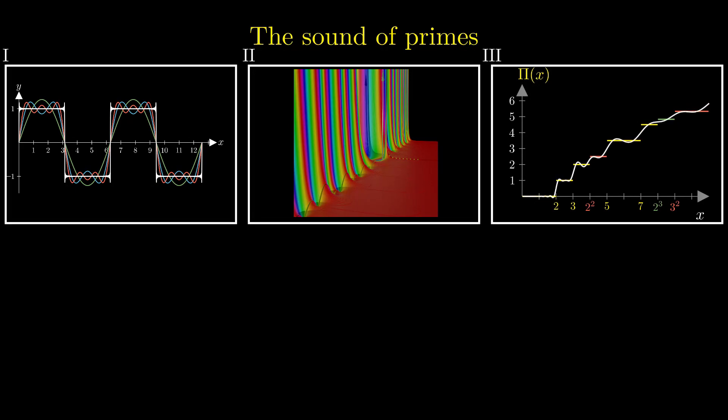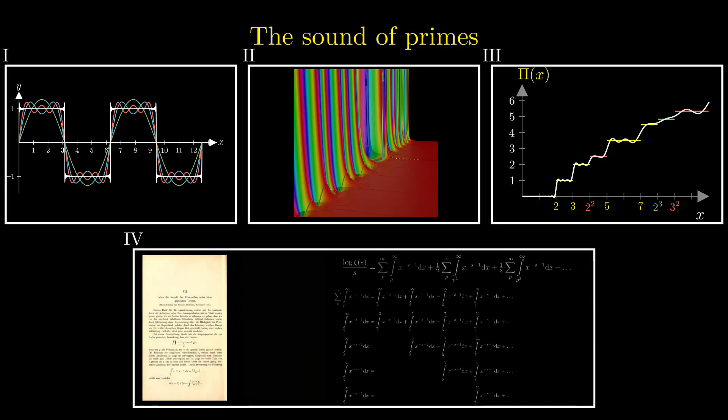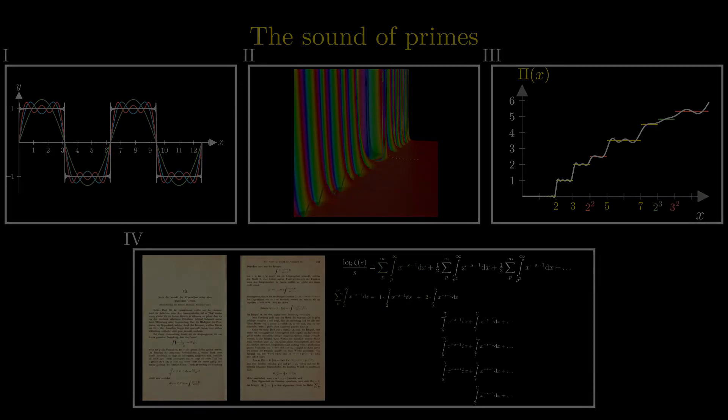We show how more and more harmonies of the zeta function refine the information about the distribution of primes. And last but not least, there are a few calculations from Riemann's original work laid out in the last part for those who want to see the shown computations confirmed rigorously.